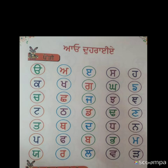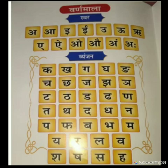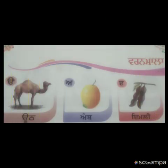पंजाबी वर्ण माला के main 35 letters को 7 lines में divide किया गया है — हर line में 5 letters आती हैं। तो आज हम first 5 letters revise करेंगे। पंजाबी वर्ण माला और हिंदी वर्ण माला almost similar ही है। जैसे हिंदी में स्वर और व्यंजन होते हैं, वैसे ही पंजाबी में भी स्वर और व्यंजन होते हैं। हिंदी में 13 letters स्वर हैं जैसे छोटा आ, बड़ा आ, छोटी ई, बड़ी ई — लेकिन पंजाबी में only 3 letters ही स्वर हैं और बाकी बचे हुए letters व्यंजन हैं।